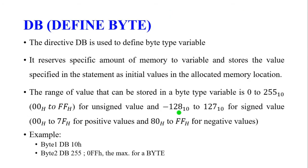Now let's look at some directives in detail. The DB (Define Byte) directive is used to define a byte type variable — that is, 8-bit data. The DB command reserves a specific amount of memory for a variable and stores the value specified in the statement as the initial value in the allocated memory location, which stores 8 bits of data.